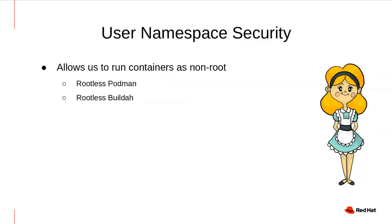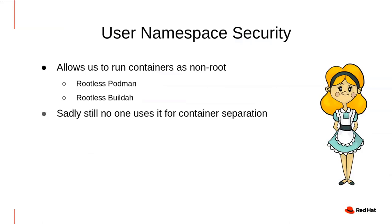UID separation has always been the standard security tool in Linux shared systems. Podman and Buildah do really cool things with user namespaces — they're the reason you can run these tools rootless, and they're also really effective at providing separation. You could imagine in a Kubernetes environment it would be a huge boost in security if every container was separated by user namespaces. Sadly, nobody is using user namespaces for container separation yet, and Red Hat has been and is leading the way with this work.